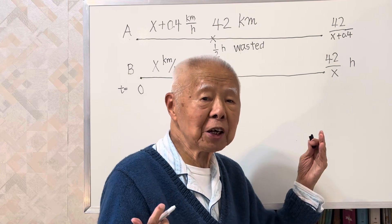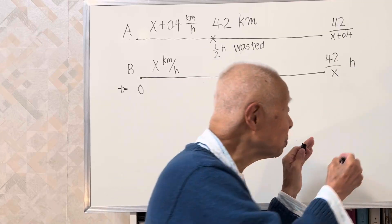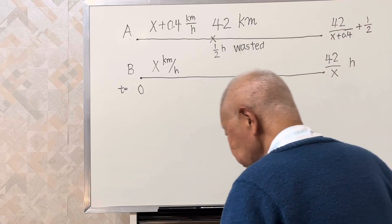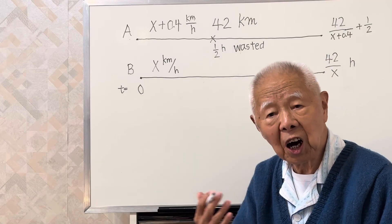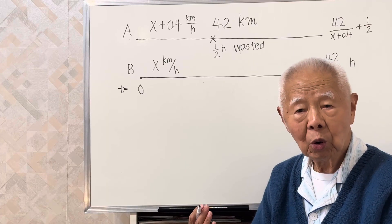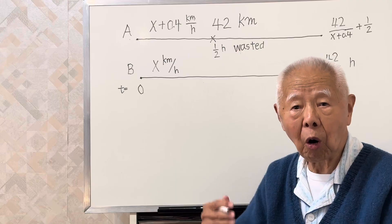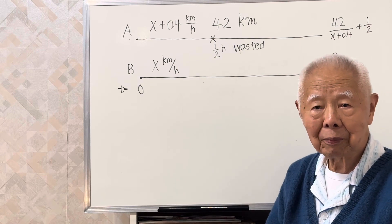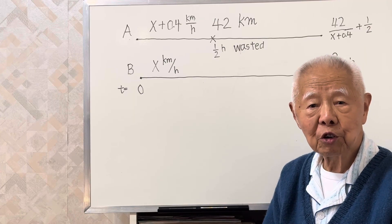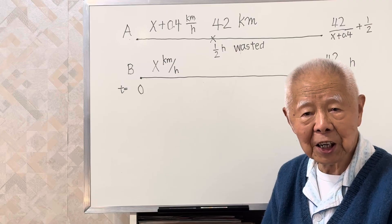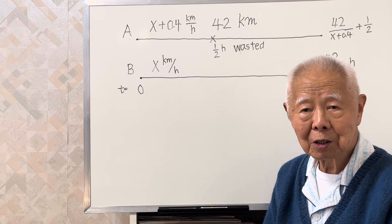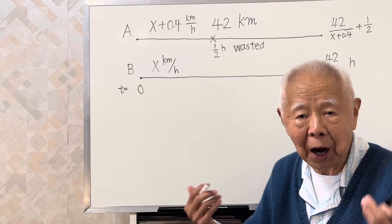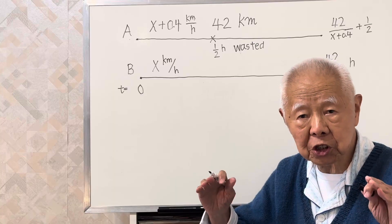A spends half an hour to repair the car, so the total time for A is 42 over (X plus 0.4) plus half an hour. Although A is fast, the overall time it takes is more. The question says A is 15 minutes later than B, which means A spends 15 minutes more than B's time.